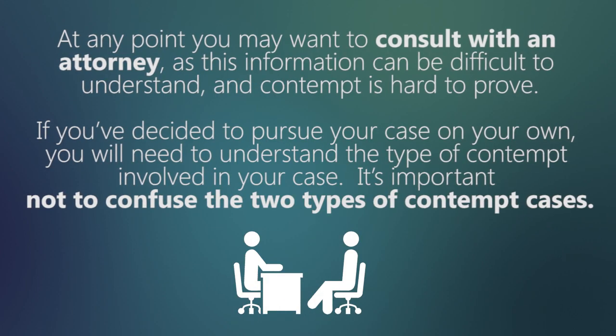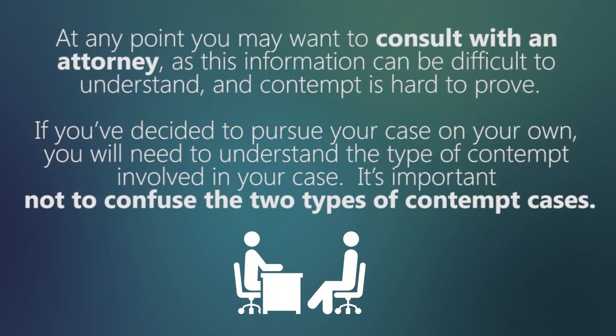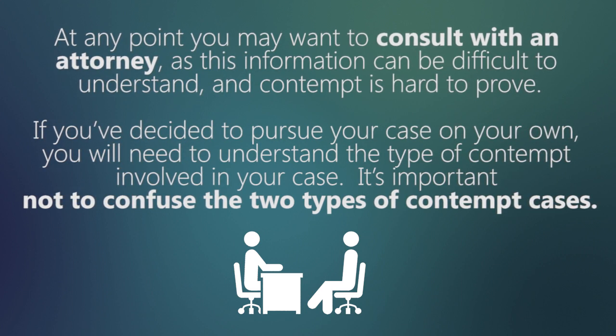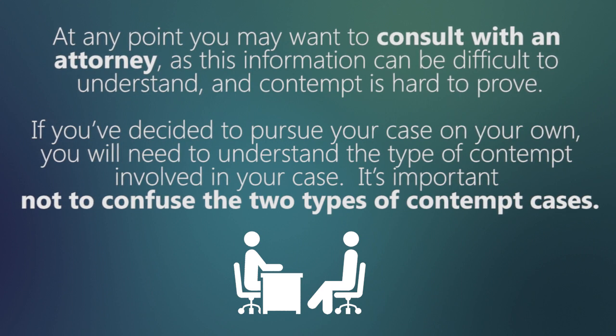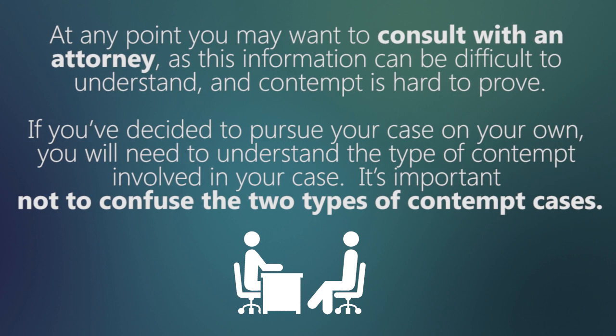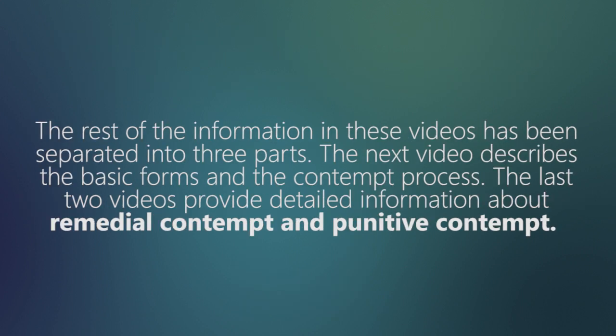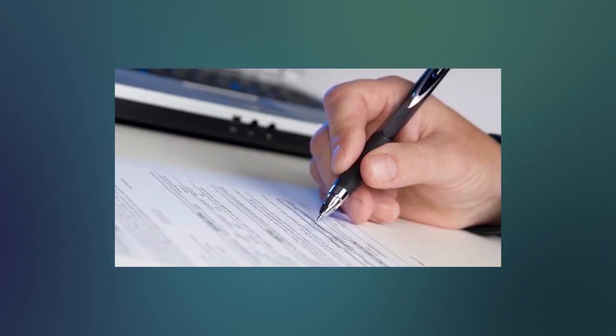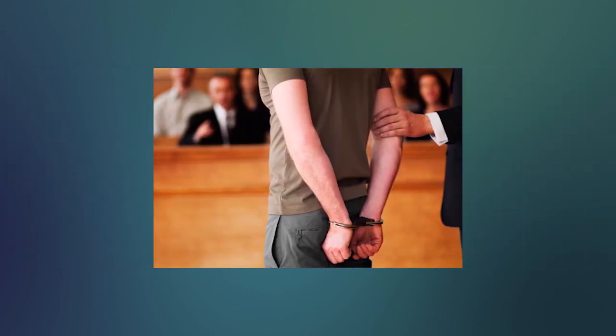At any point, you may want to consult with an attorney as this information can be difficult to understand and contempt is hard to prove. If you decide to pursue your case on your own, you will need to understand the type of contempt involved in your case — it's important not to confuse the two types. If you are thinking about filing a contempt case, you will need to decide whether you want to ask the judge to fix or remedy the situation, or whether you want to ask the judge to punish the other person.